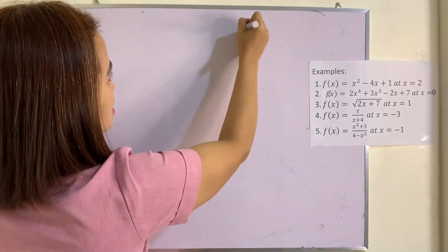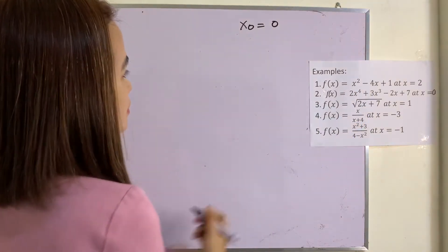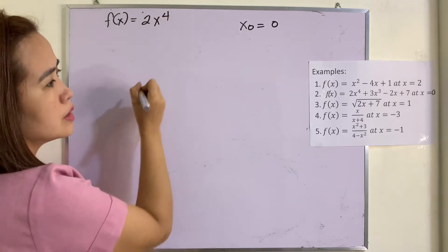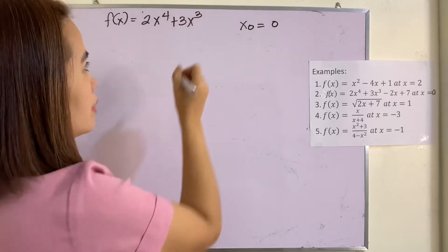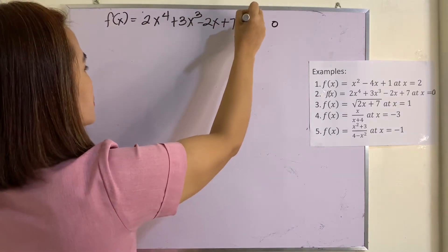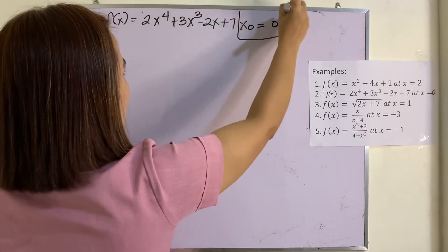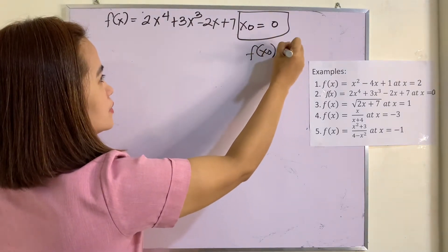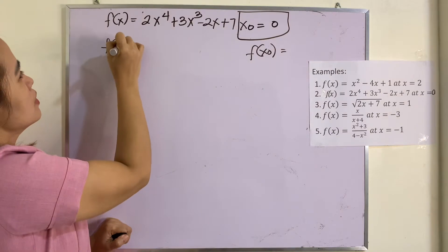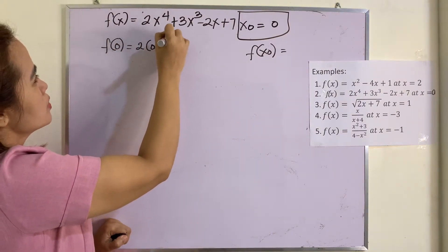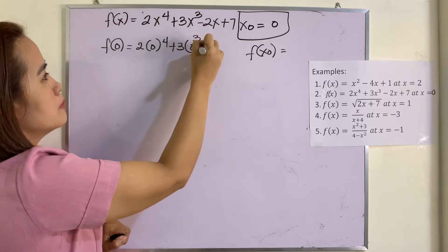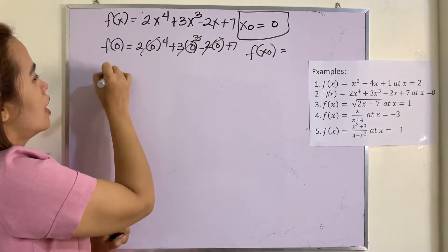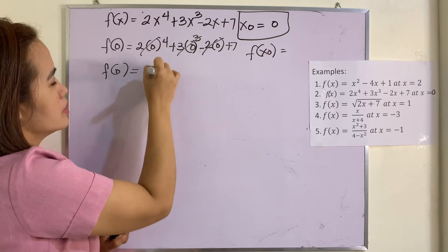Example number 2. Our x₀ is equal to 0. Our F(x) is equal to 2x raised to the 4th plus 3x cubed minus 2x plus 7. So x₀ equals 0. Let us find first our F(x₀), which is F(0): we have 2(0)⁴ plus (0)³ minus 2(0) plus 7. All terms with x vanish, so F(0) is equal to 7.